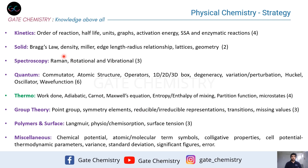There are five or six major topics — kinetics, quantum, spectroscopy, thermodynamics, group theory, and electrochemistry — that carry a major chunk of the weightage in physical chemistry and are asked very frequently. However, some of these topics are quite vast and the types of questions framed vary considerably between exams.